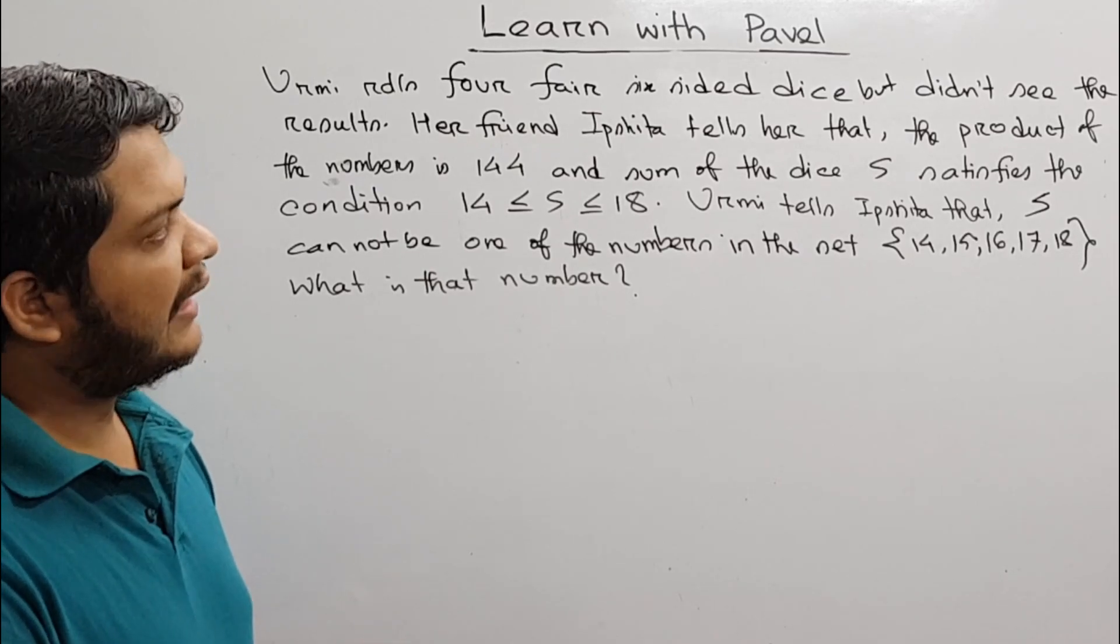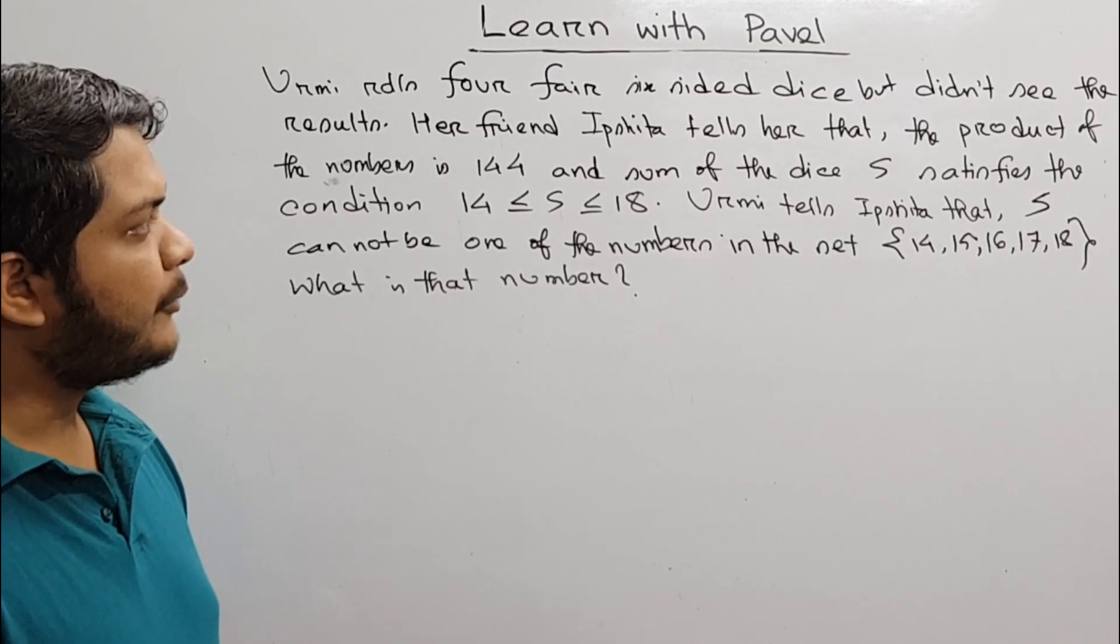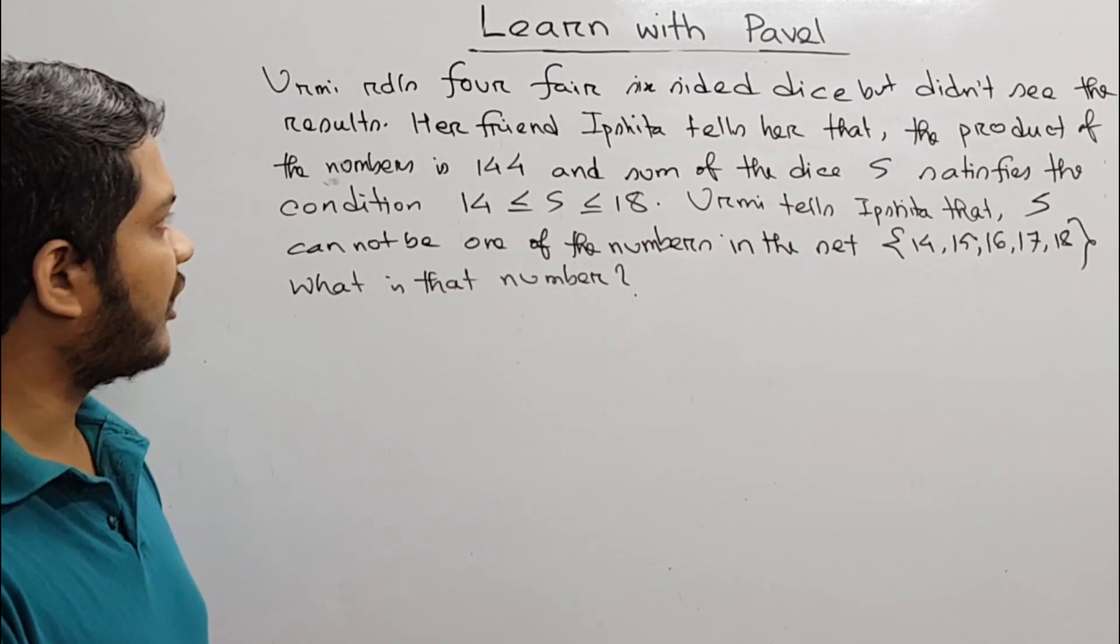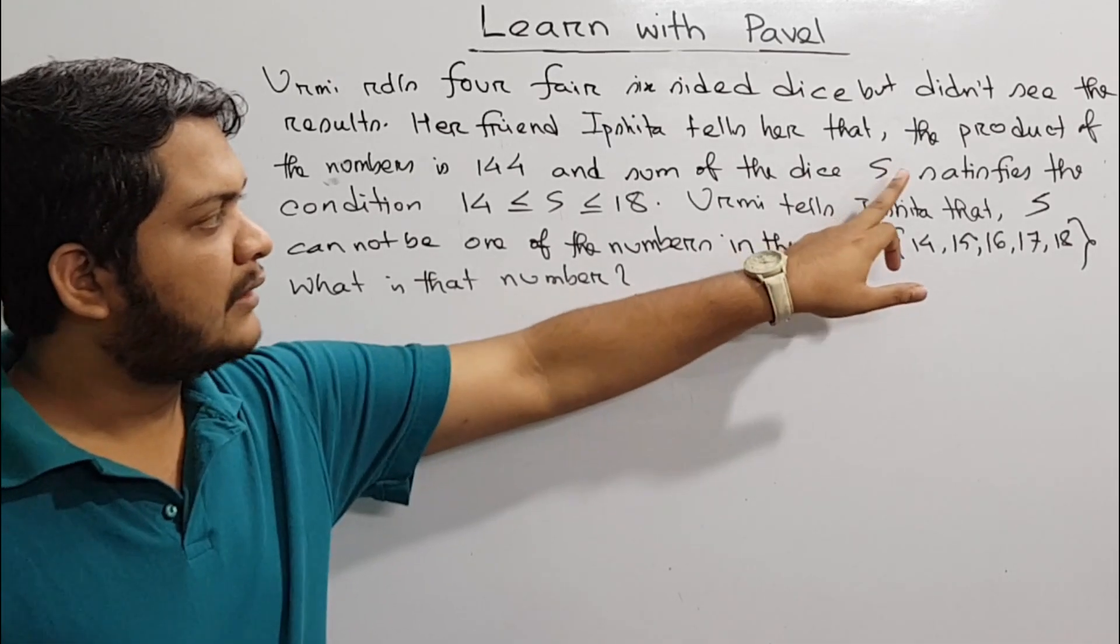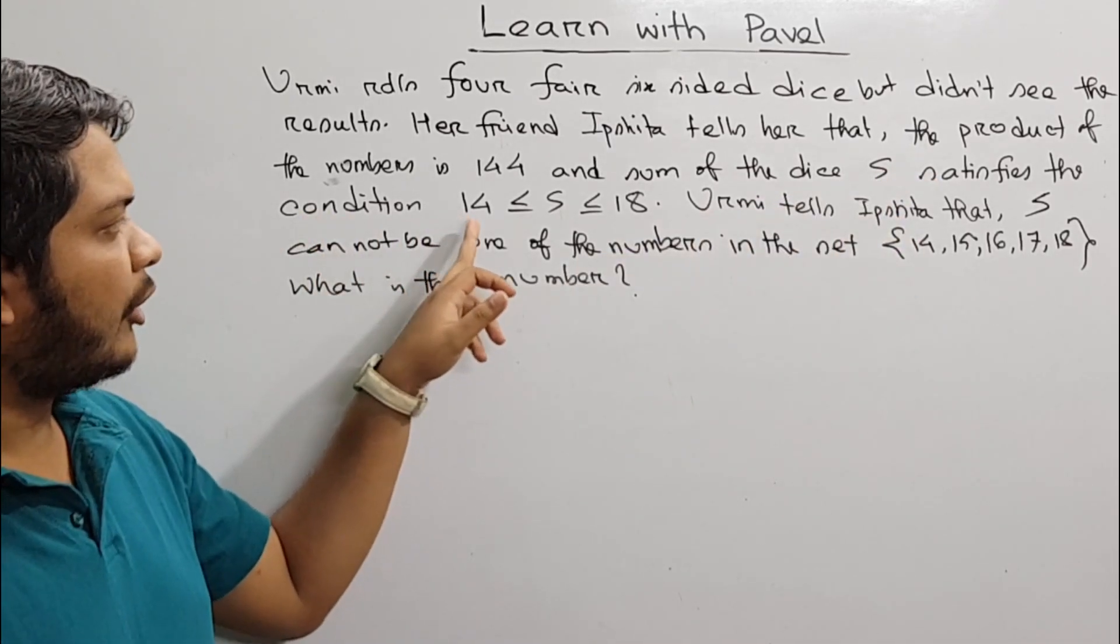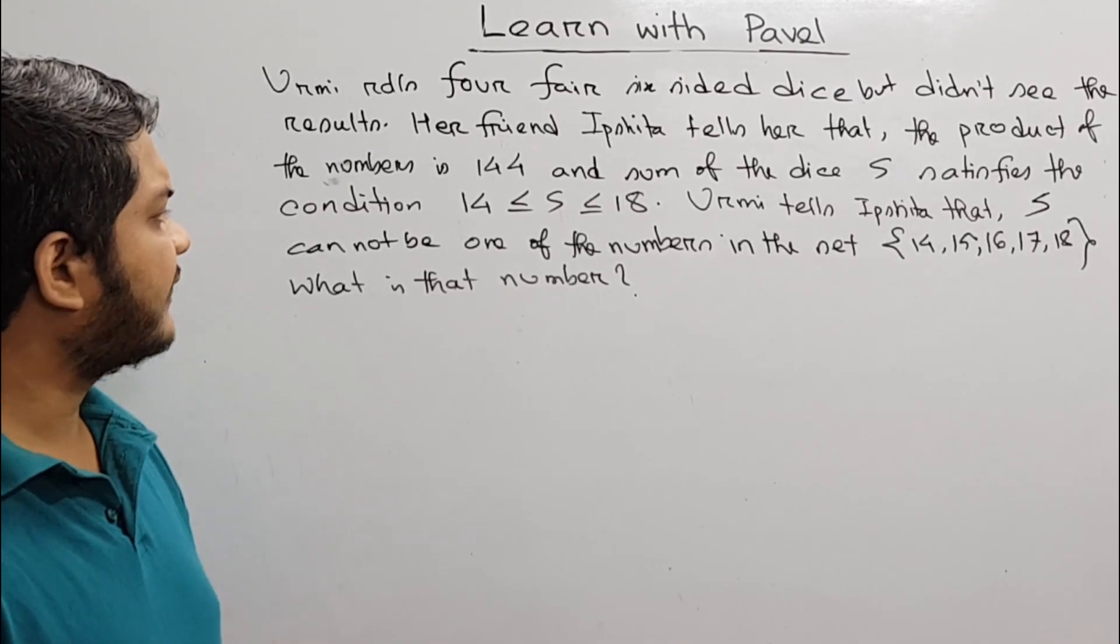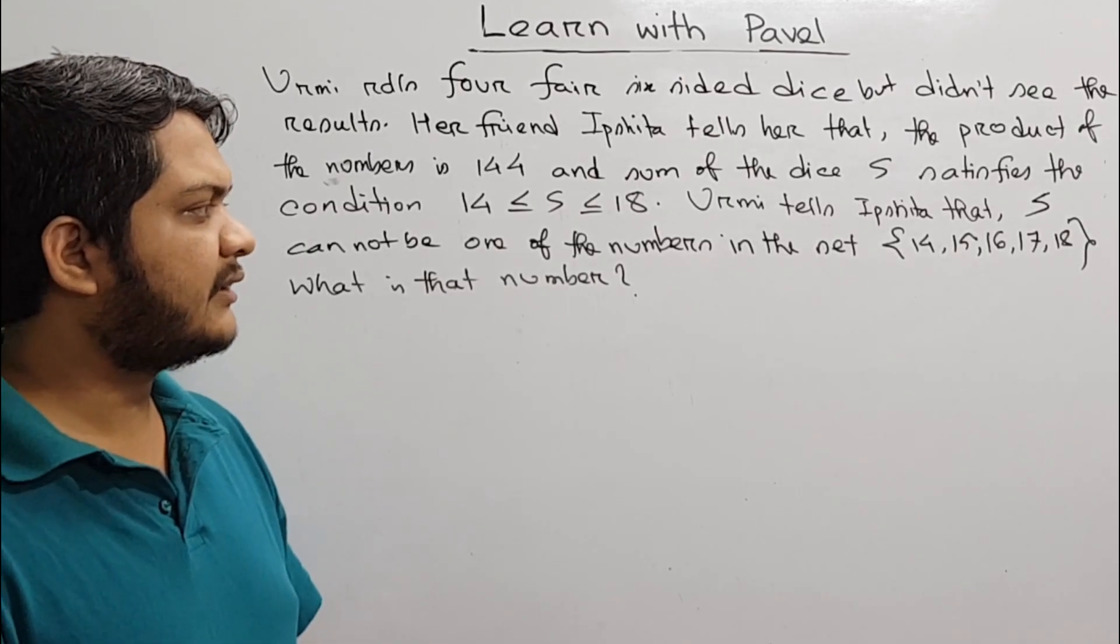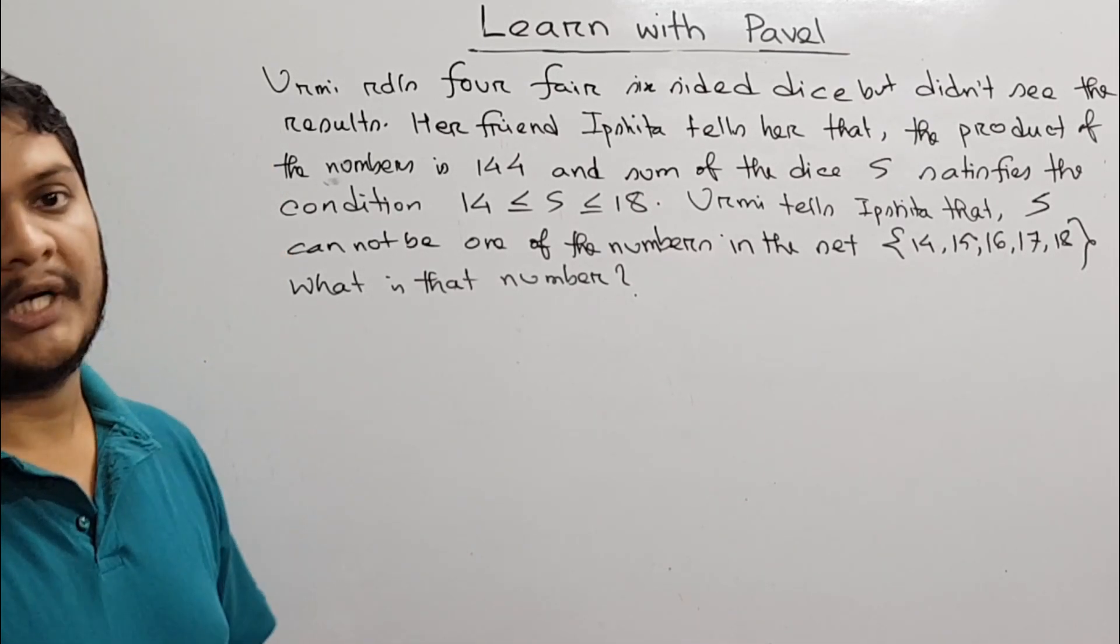Urmi rolls 4 6-sided dice but doesn't see the results. Her friend Ipshita tells her that the product of the numbers is 144 and the sum of the dice satisfies the condition 14 ≤ s ≤ 18. Urmi tells Ipshita that s cannot be one of the numbers in the set 14, 15, 16, 17, 18. What is that number?